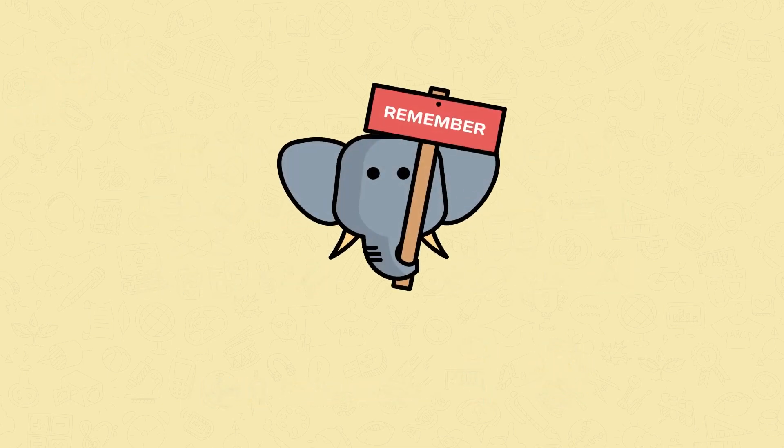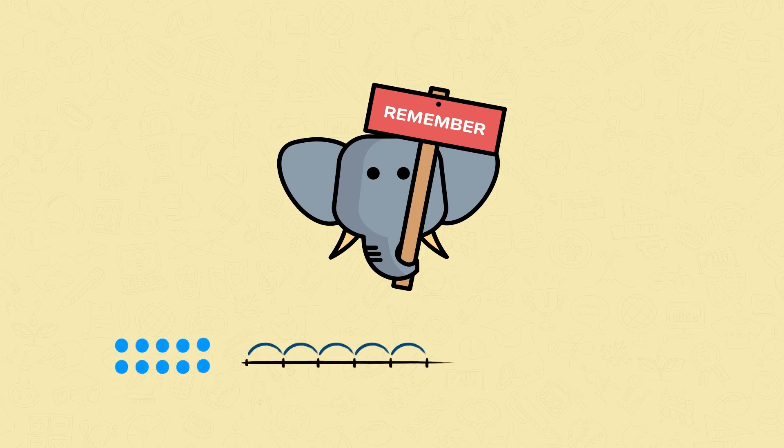So remember, when multiplying by 2, 5 and 10, you should first be able to count in multiples of 2, 5 and 10. Once you can do this, you can use arrays, number lines or your fingers to help you. As you become more confident, you will be able to multiply by 2, 5 and 10 in your head.